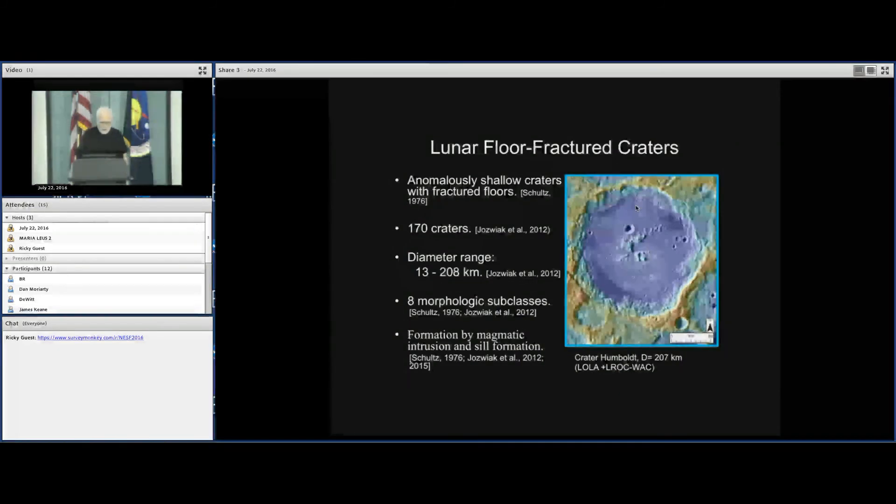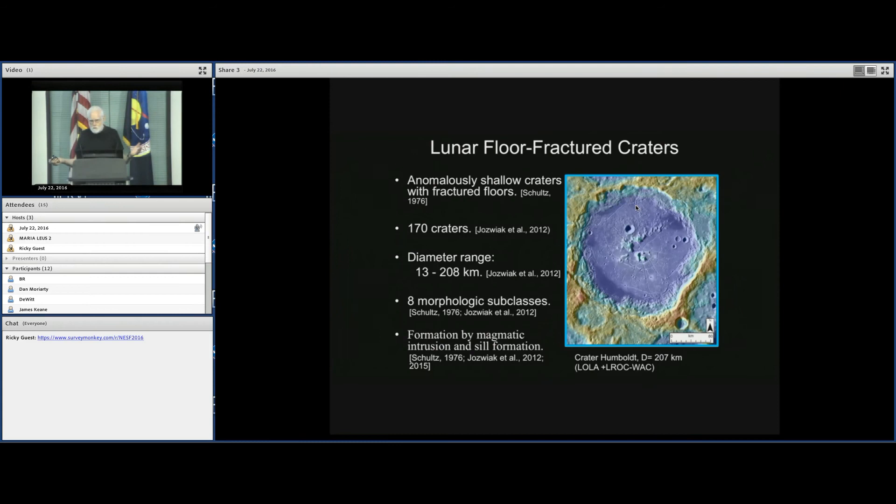What are the floor fractured craters in detail? Of course, the most important thing is you observe their, you know, geologists. We're very straightforward. You call them the way you see them. It's a crater. Its floor is fractured. Therefore, it's a floor fractured crater. Let's not get too creative here. So they're anomalously shallow. This was found out as soon as any kind of photometric data or just simply shadow measurements were made. There's 170 of them as documented by Lauren in her paper in 2012. She reexamined the Schultz catalog and all the new data and added to it and modified it. The diameter range is 13 to 208 kilometers.